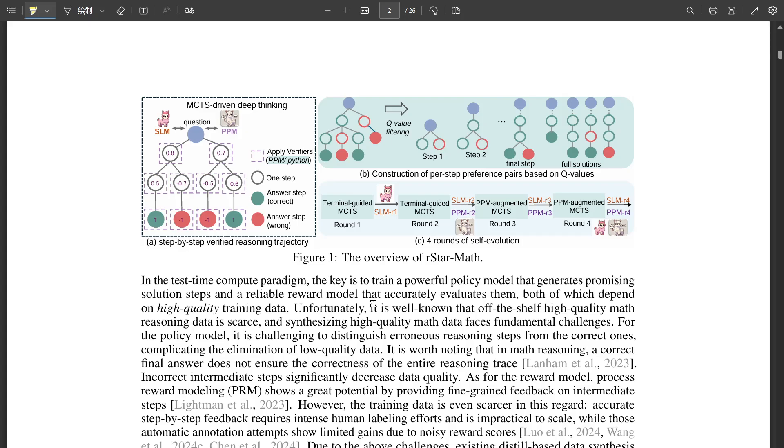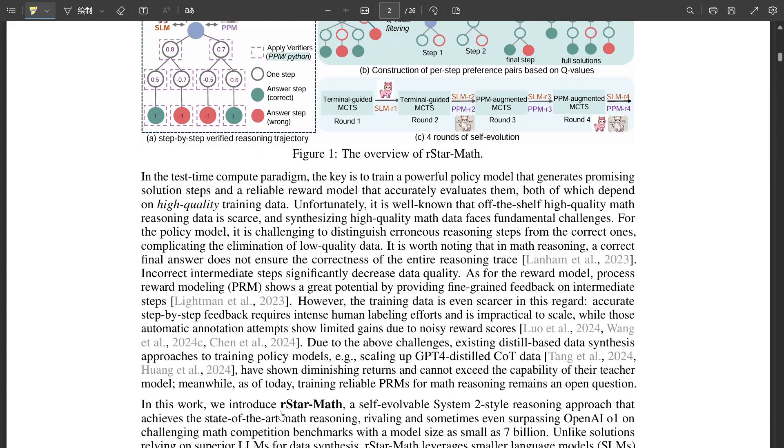That's fascinating. But how does it know which solution paths are the best ones to take? Well, that's where the Process Preference Model comes into play, or PPM. Think of it as the AI's inner math tutor. Instead of simply saying right or wrong, the PPM actually scores each step of the solution process, helping the AI learn to favor those most effective strategies.